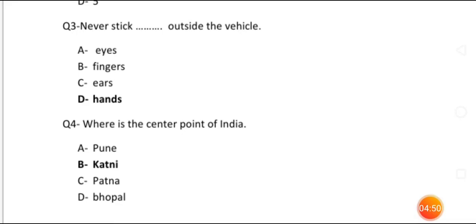Question number 4: What is the center point of India? The four options were Pune, Katni, Patna, and Bhopal. The answer is Katni, which is in the state of Madhya Pradesh. So the center point of India is Katni, Madhya Pradesh.